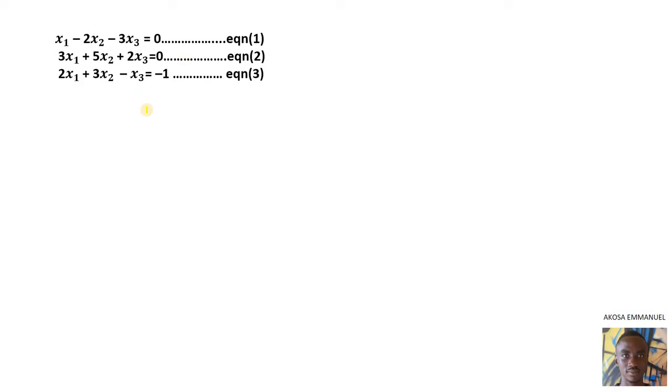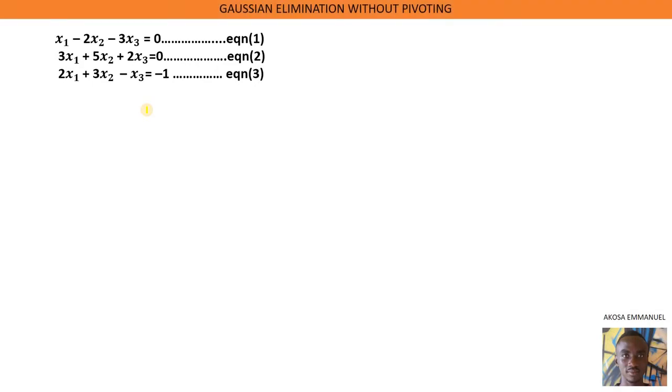What about if we are given a system that is not in the form of an upper triangular or lower triangular system? We have to find a way to reduce it into one of those forms. Under Gaussian elimination, we have Gaussian elimination without pivoting, Gaussian elimination with partial pivoting, and Gaussian elimination with complete pivoting. Today we are going to look at Gaussian elimination without pivoting.